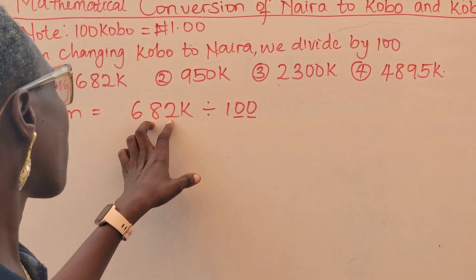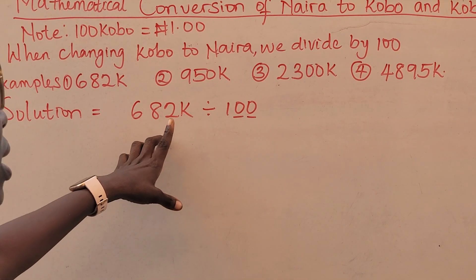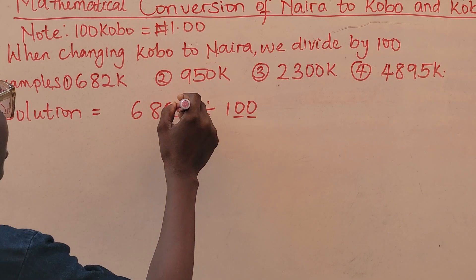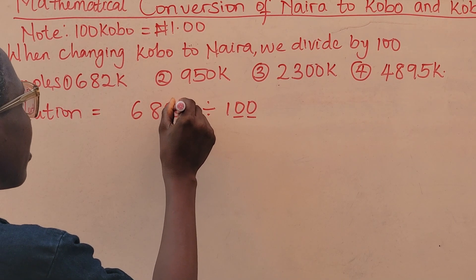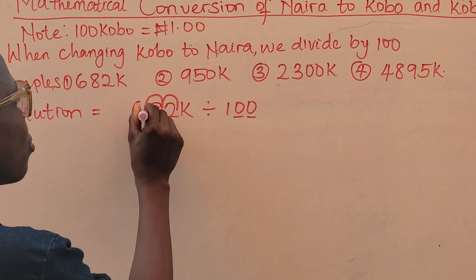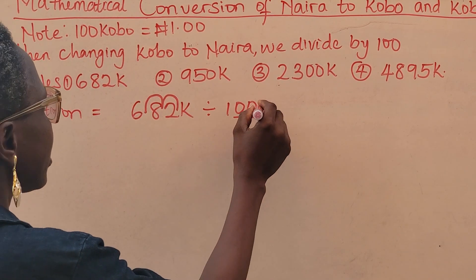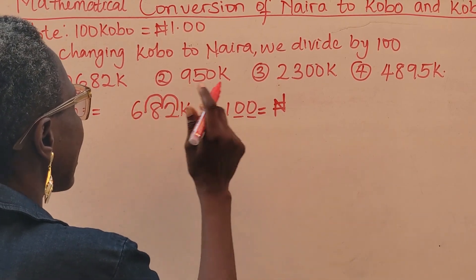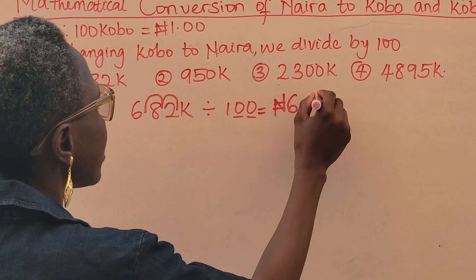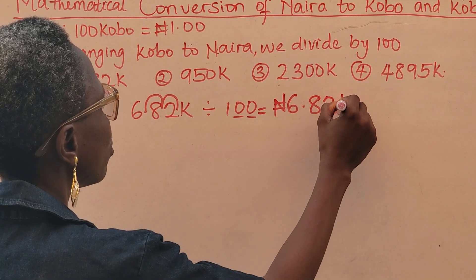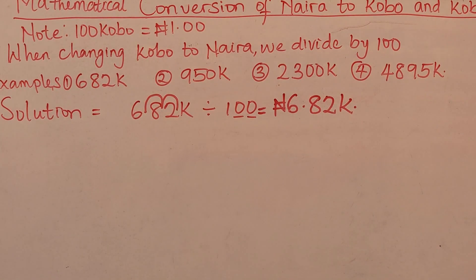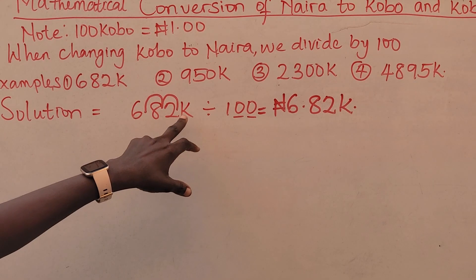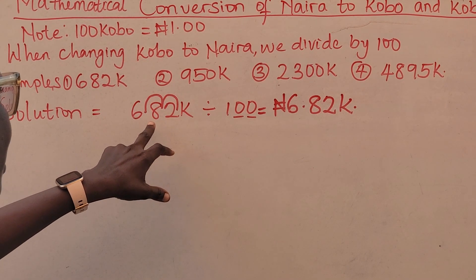When you have a whole number like this, the decimal point is at the end. We have two zeros, so we move the decimal point one place and two places. My answer will be — write your naira sign — 6.82. So 682 kobo equals 6 naira 82 kobo, because I am dividing and moving the decimal point twice according to the number of zeros.